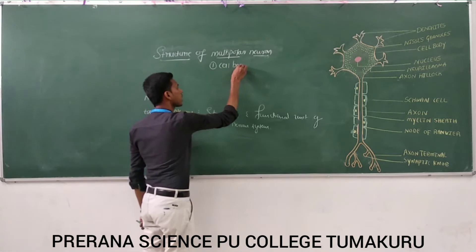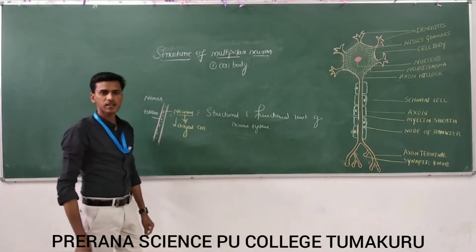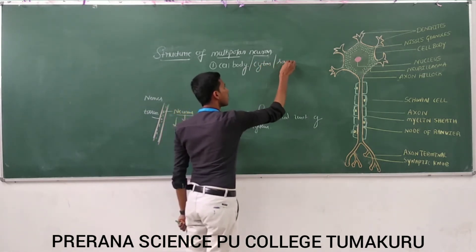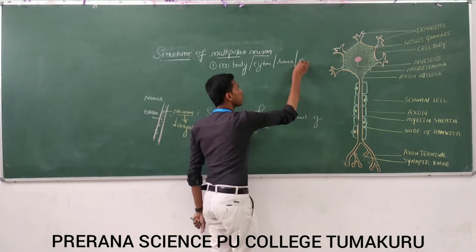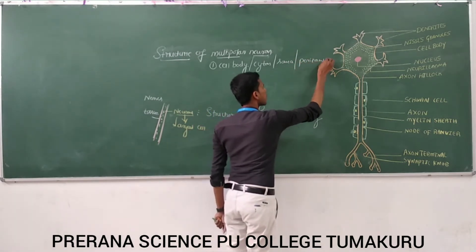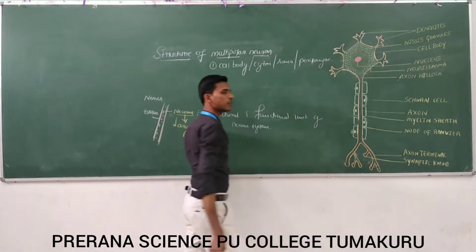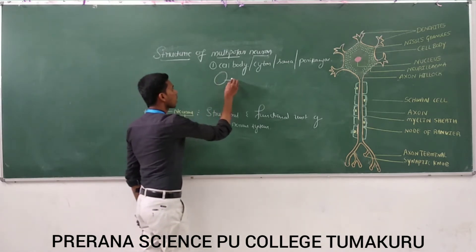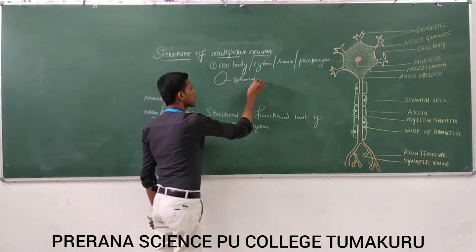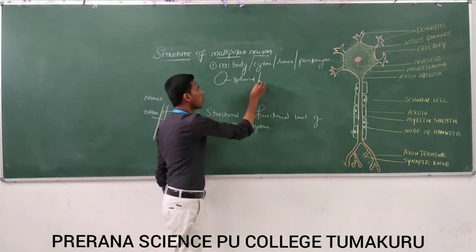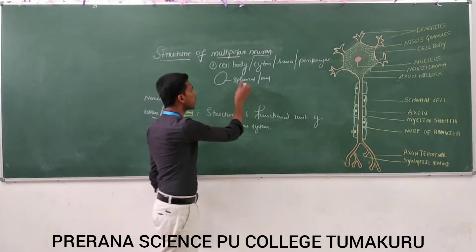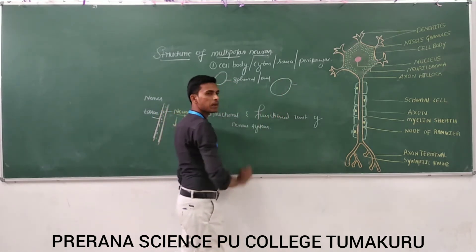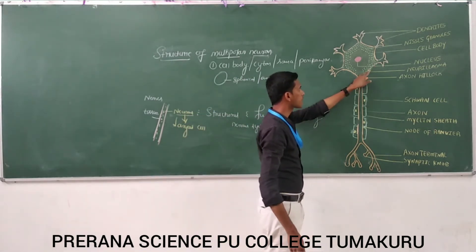The first portion is called the cell body. So cell body has alternate names — like cytone, also called perikaryon. So the cell body is of spherical or oval shape. This cell body has a cell membrane. That cell membrane is called neurolemma.